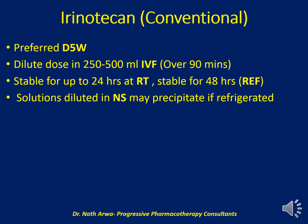Irinotecan (conventional form): it is preferred that we do IV admixture using 5% dextrose in water, diluting the prescribed dose in 250 to 500 ml of dextrose 5% in water. After homogenizing, we should infuse the final solution over 90 minutes. Such a solution is stable for up to 24 hours at room temperature and 48 hours under refrigeration. Solutions diluted with normal saline may precipitate if refrigerated, so literature discourages the use of normal saline in the IV admixture of conventional irinotecan.